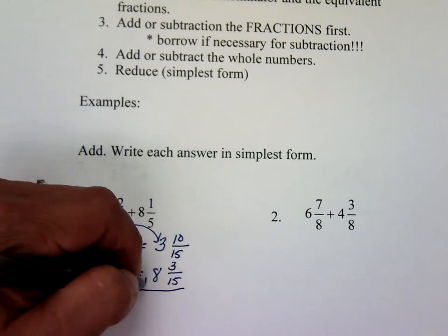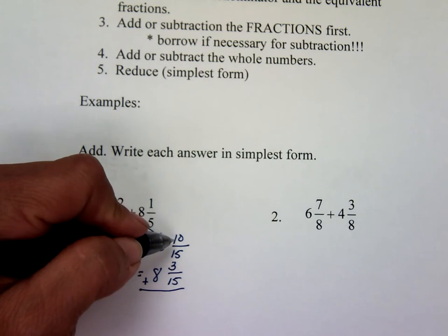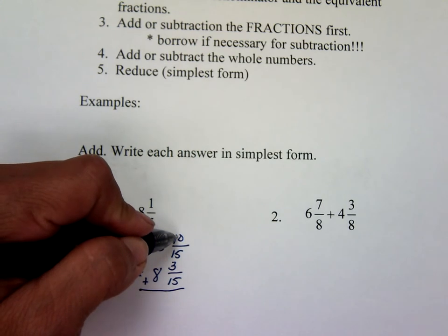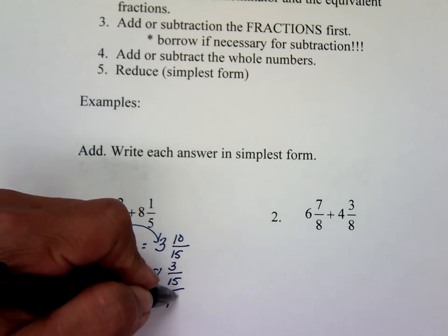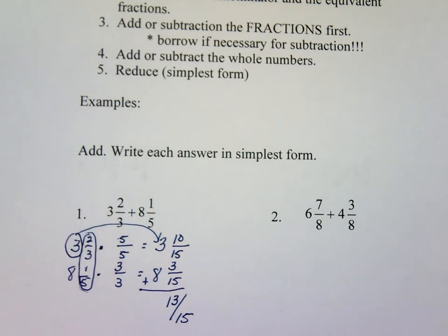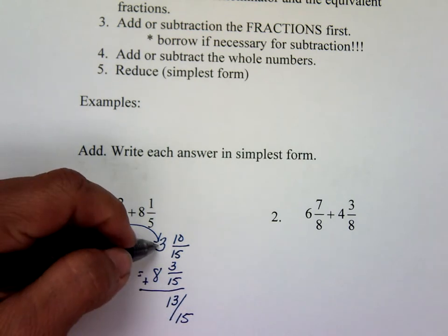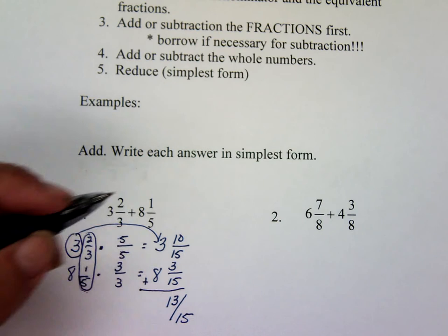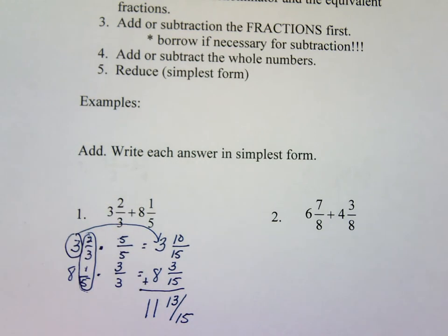You are adding, so you're going to add your fractions first. Ten plus three is thirteen, and your denominator stays the same — fifteen. And eight plus three is eleven. So your answer is eleven and thirteen-fifteenths.